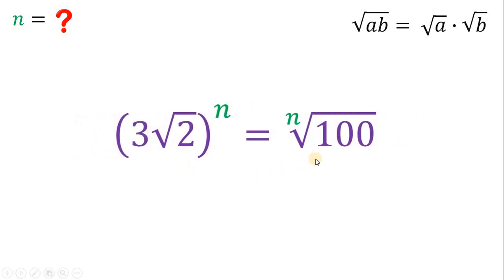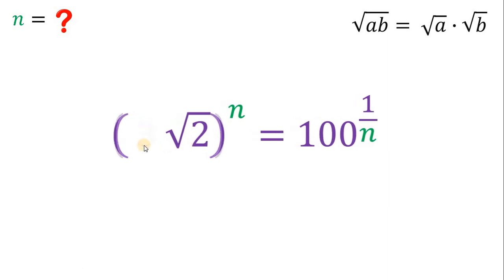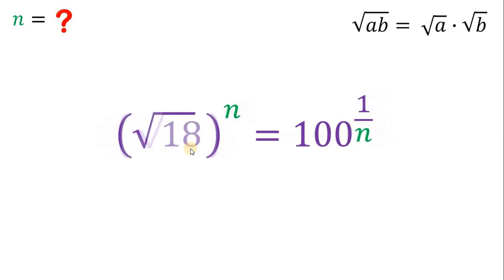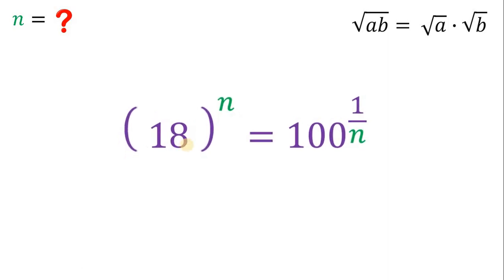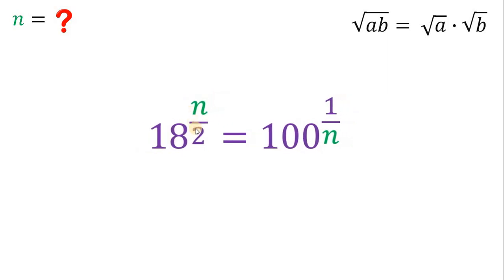On the right side, we have the nth root of 100, which can be written as 100 raised to the power of 1 over n. Now, 3 times square root of 2 — let's simplify this because 3 is the square root of 9. Using the same identity, square root of 9 times square root of 2 is just square root of 18. Square root of 18 is just 18 raised to the 1/2. Using the laws of exponents, 18 raised to 1/2, raised to the power of n, is just 18 raised to n over 2.